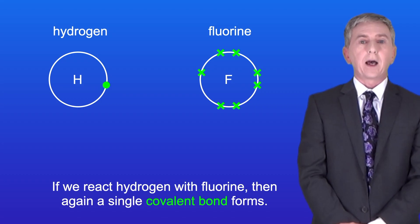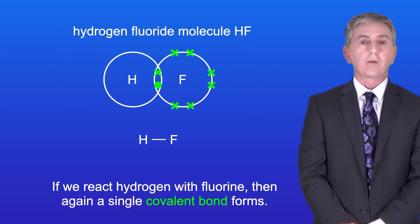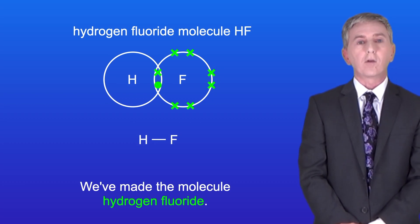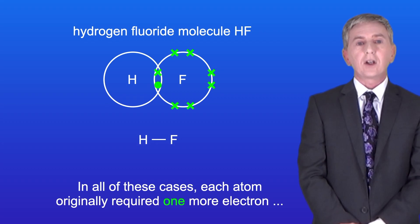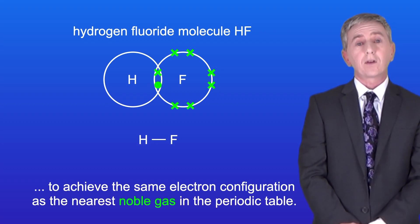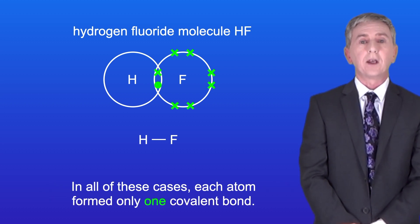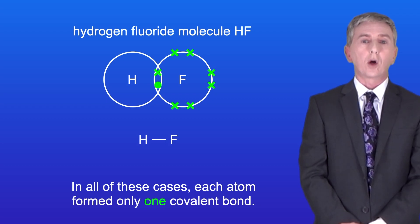If we react hydrogen with fluorine, again a single covalent bond forms and we've made the molecule hydrogen fluoride. In all of these cases each atom originally required one more electron to achieve the same electron configuration as the nearest noble gas in the periodic table, and in all of these cases each atom formed only one covalent bond.